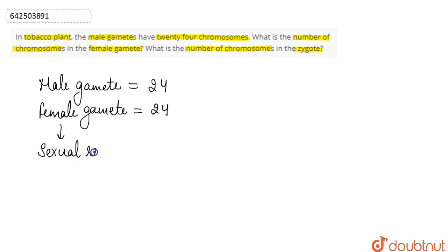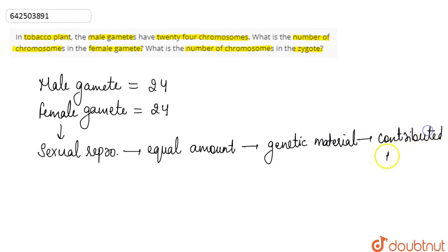In case of sexual reproduction, equal amount of genetic material is contributed. Equal amount of genetic material is contributed by both the parents, by both parents.